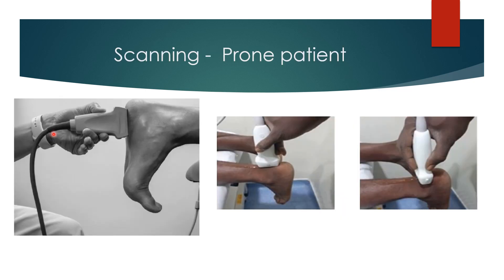There is no better position than prone to examine as well as intervene for a plantar fascia injection. Keep the patient prone with the foot hanging down. Examine the long axis and short axis of the fascia — the short axis is less useful for identifying pathologies but very useful for intervention. Examination of the Achilles tendon with dorsiflexion and plantar flexion movement gives better imaging. The short axis of the Achilles tendon is good for injecting retrocalcaneal bursitis.